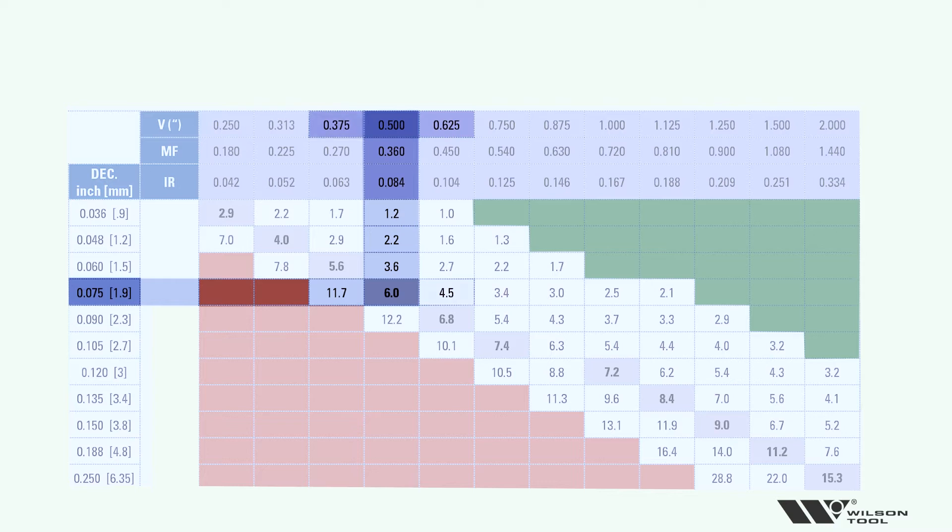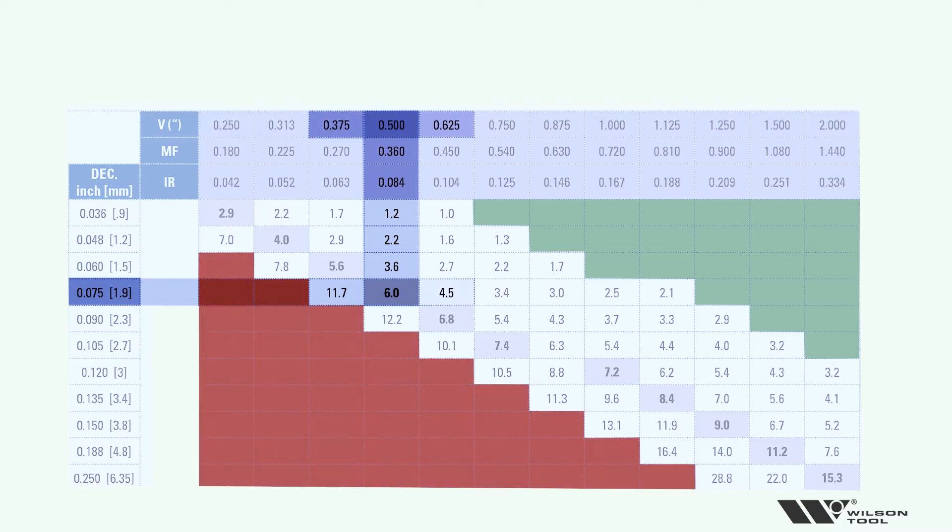If I go to the left of that selected V opening, you can see tonnage starts to go up to the point where it turns red. Red is bad. And we don't want to recommend tonnage for unsafe situations.